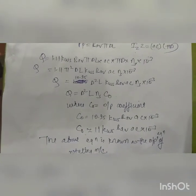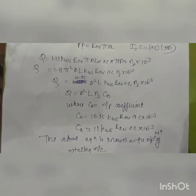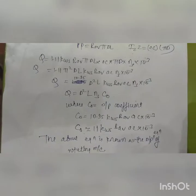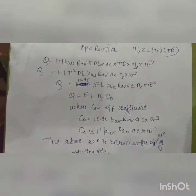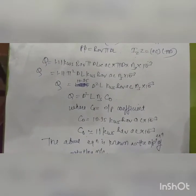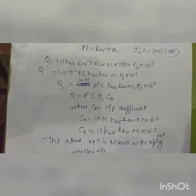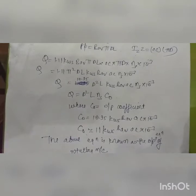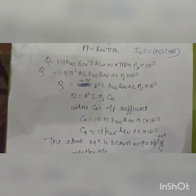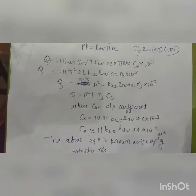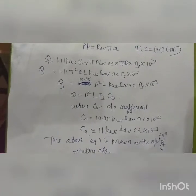Good afternoon everyone. We are back again with the output equation of an induction motor. Yesterday we covered the output equation for an AC machine and derived the relation Q equals D² L into Ns into C0, where Q is the KVA rating, D is the stator bore diameter, L is the stator core length, Ns is the synchronous speed, and C0 is the output coefficient.